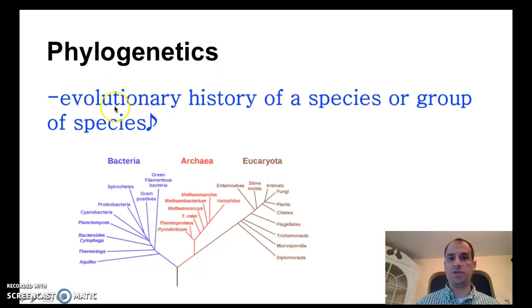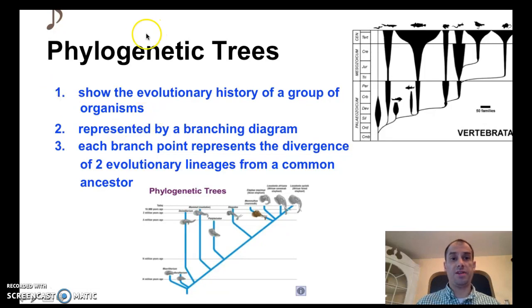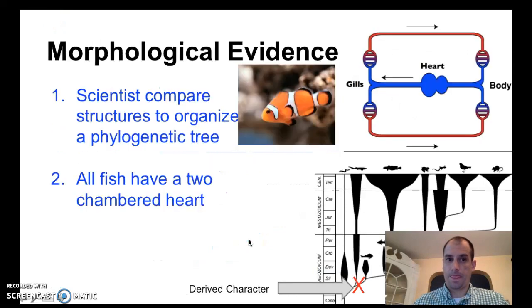This is a really cool slide from Bozeman Biology that goes over the major terms we're going to be talking about today. Phylogenetics is the evolutionary history of a species or group of species. Phylogenetic trees show the evolutionary history of a group of organisms. It's represented by a branching diagram. Each branch point represents the divergence of two evolutionary lineages from a common ancestor. Think of a tree—this would be one branch, this would be another branch. Here's where the branches come together, and that's where their common ancestor is.